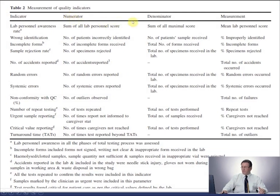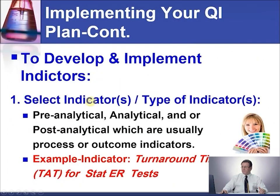A list of indicators gives you the denominator and the measurements, if you're interested. Next, to develop and implement an indicator, we select the indicator type — pre-analytical, analytical, and post-analytical. Let's take an example: we want to do the turnaround time for the stat test in the ER.